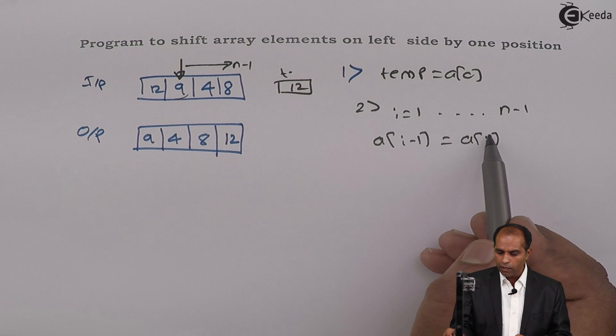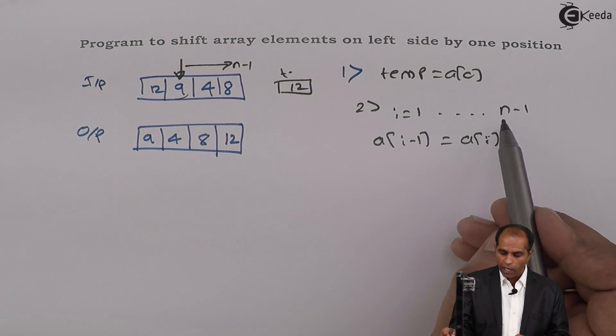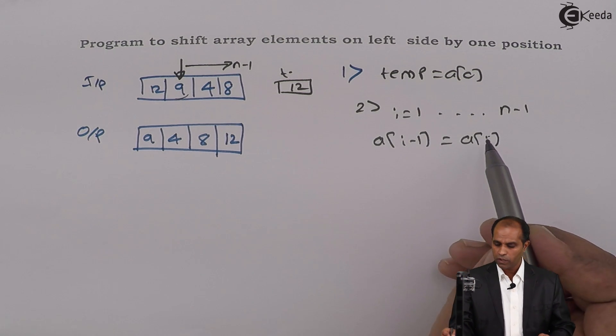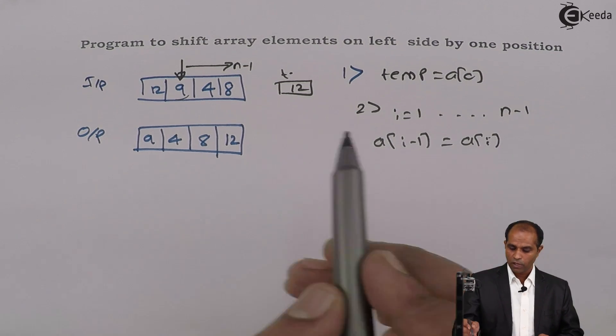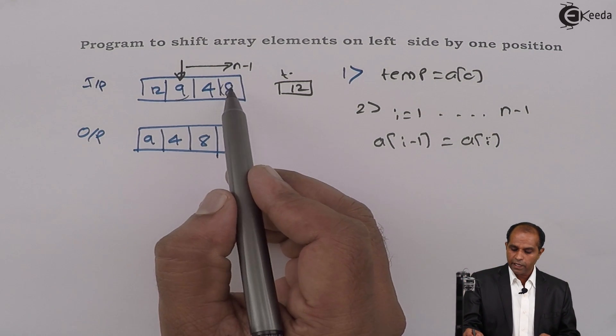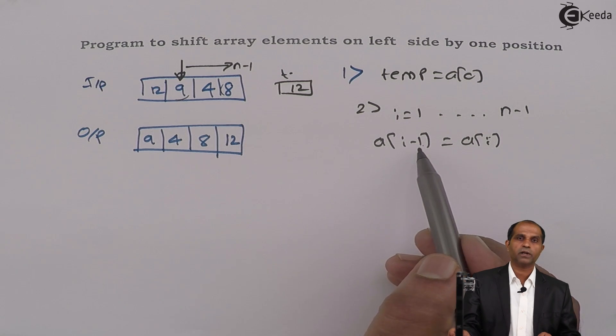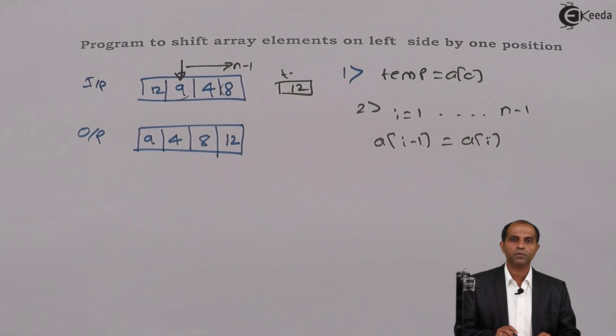Keep on doing this task till you reach to the last element. So when i is n minus 1, substitute n minus 1 over here. i is n minus 1, a[n-1]. a[n-1] is 8. 8 gets copied at a[n-1] minus 1, that is n minus 2. So 8 gets copied to the next position.